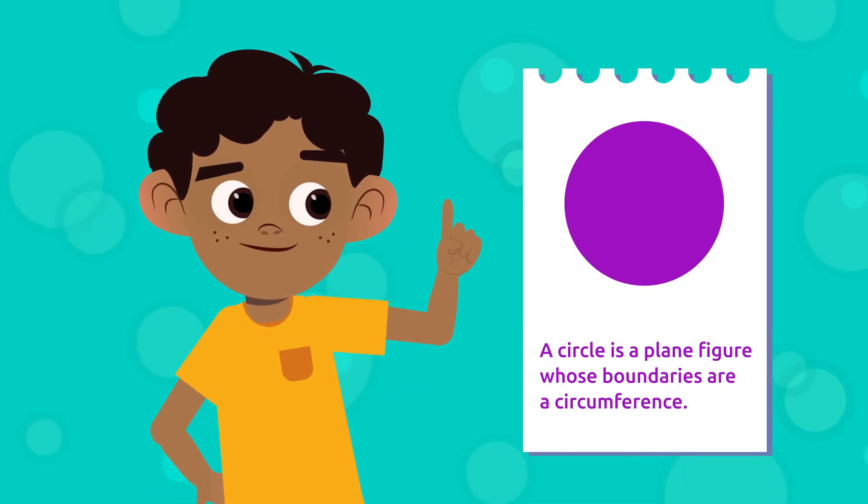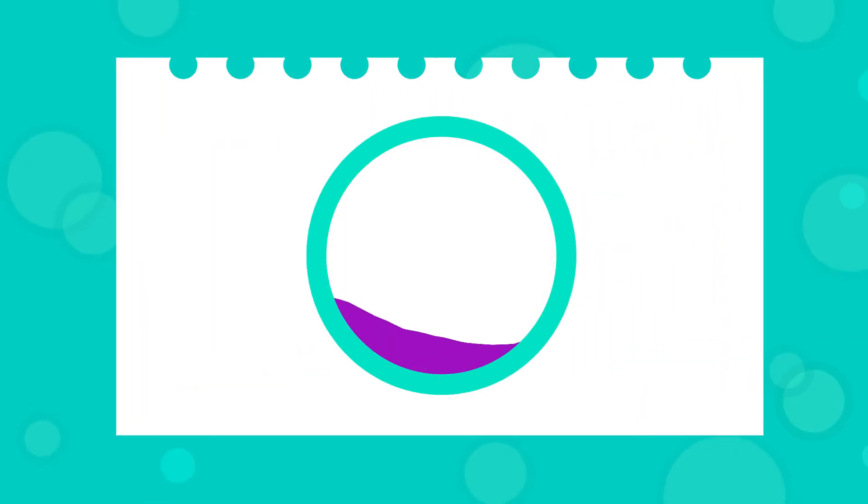A circle's boundaries are a circumference. This means that the circle is everything the circumference contains—in other words, the circle is the inside of the circumference. Because a circle is a plain figure, we measure its area or surface.